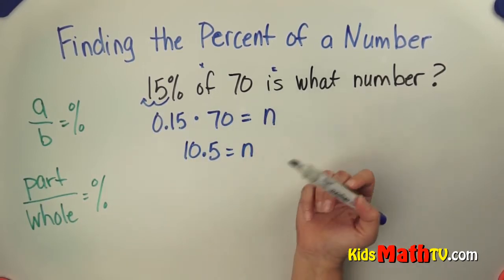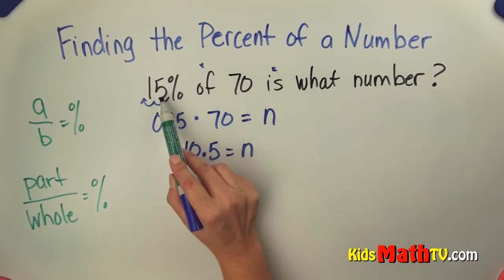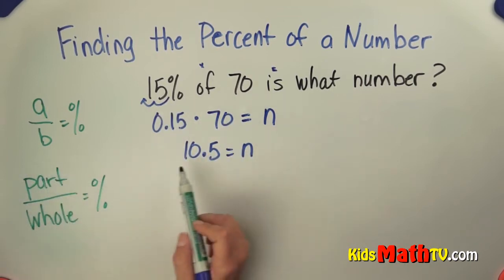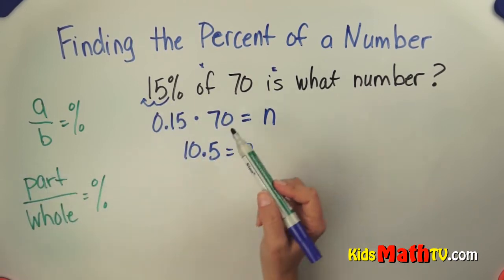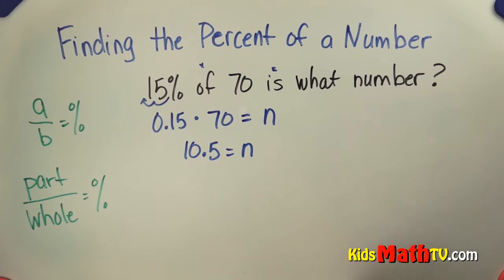So if this were a test, there were 70 points on the test, you got 15% on your test. That means the part that you got was 10 and a half points. You got 10 and a half points out of 70 to get a 15%. Not a great percentage. We can also do this by setting up proportions.